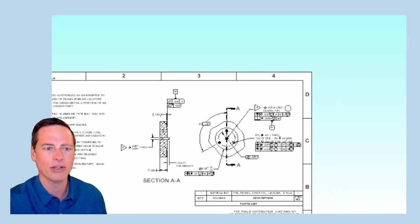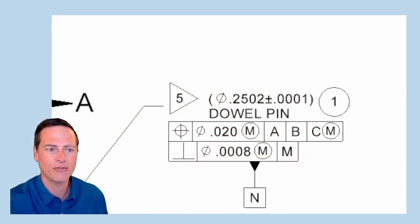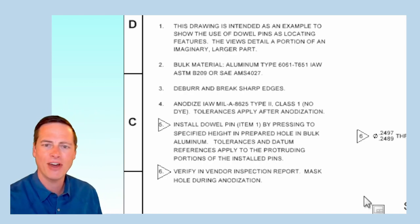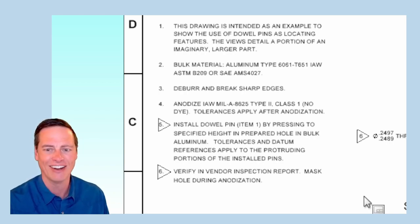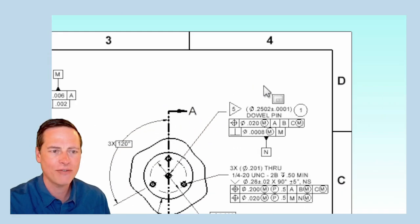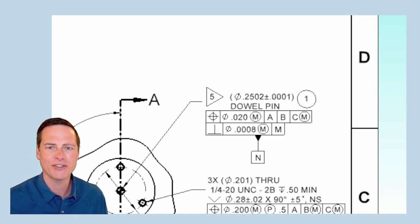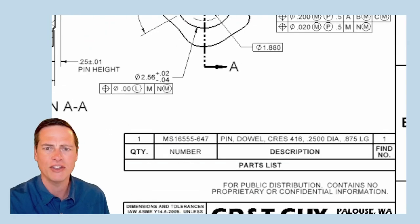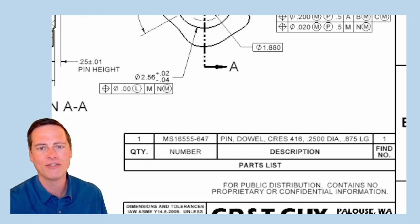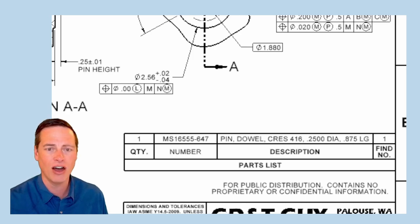Now let's look at the callouts on the dowel pin. Starting with this flag note 5. In the general notes, we see that flag 5 is telling the supplier to press the pin in to the specified height in a prepared hole. Got it. Next, I have a reference for the pin diameter. I make it reference because it's not part of the inspection per se. This size has already been confirmed by the pin manufacturer. But I still include the size limit because it will help with some calculations, as you'll see in a bit. And then there's this balloon note 1, which tells us that the pin is item 1 in the parts list below.